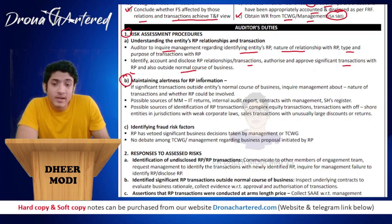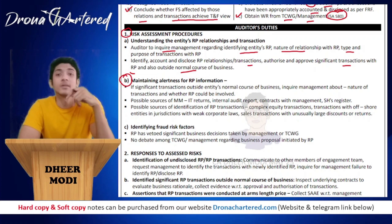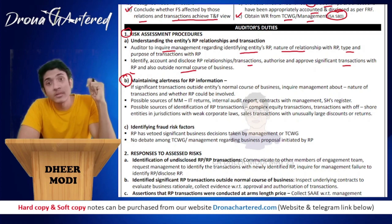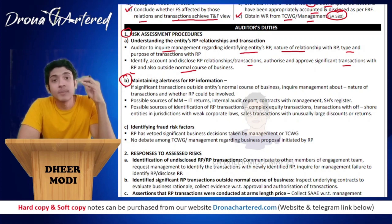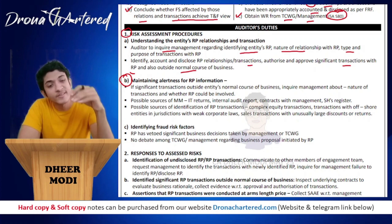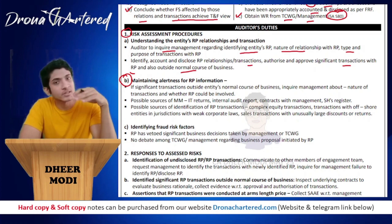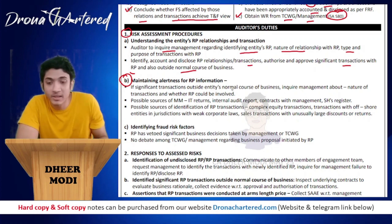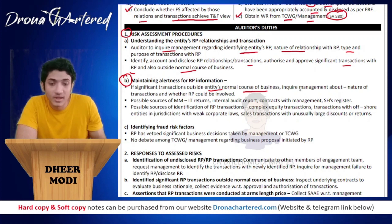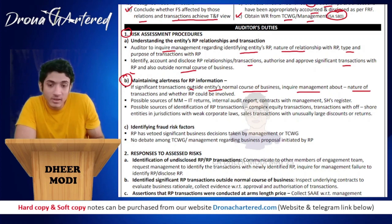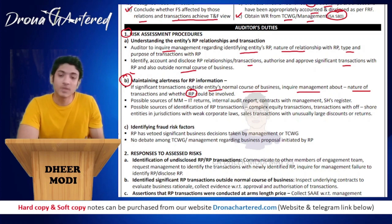Second is maintaining alertness for related party information. The auditor must identify instances where management has not disclosed a related party or a related party transaction, even when it appears prima facie that a transaction might involve a related party. If significant transactions are outside the entity's normal course of business, inquire management about the nature of the transaction and whether a related party could be involved.